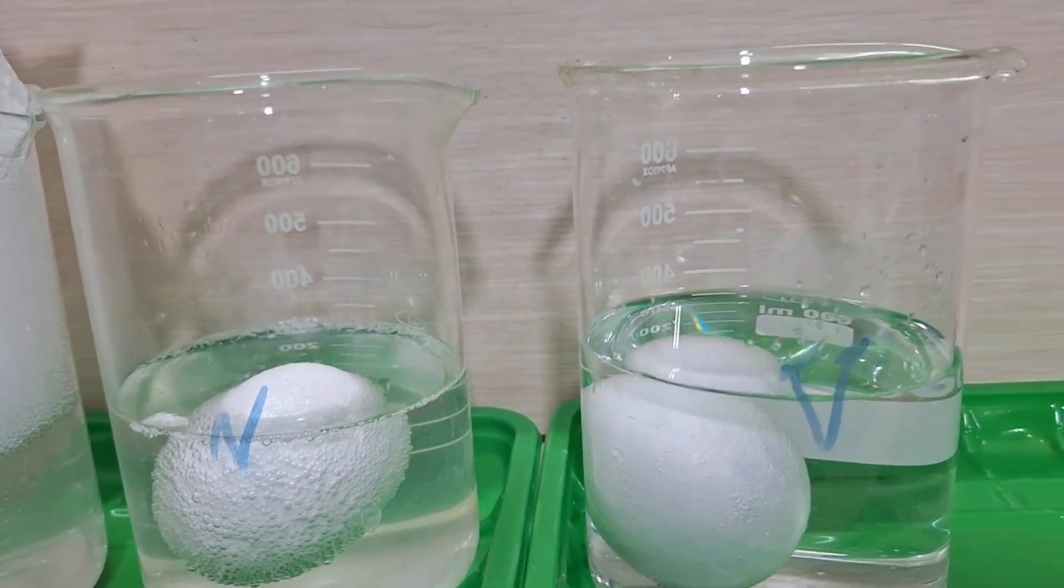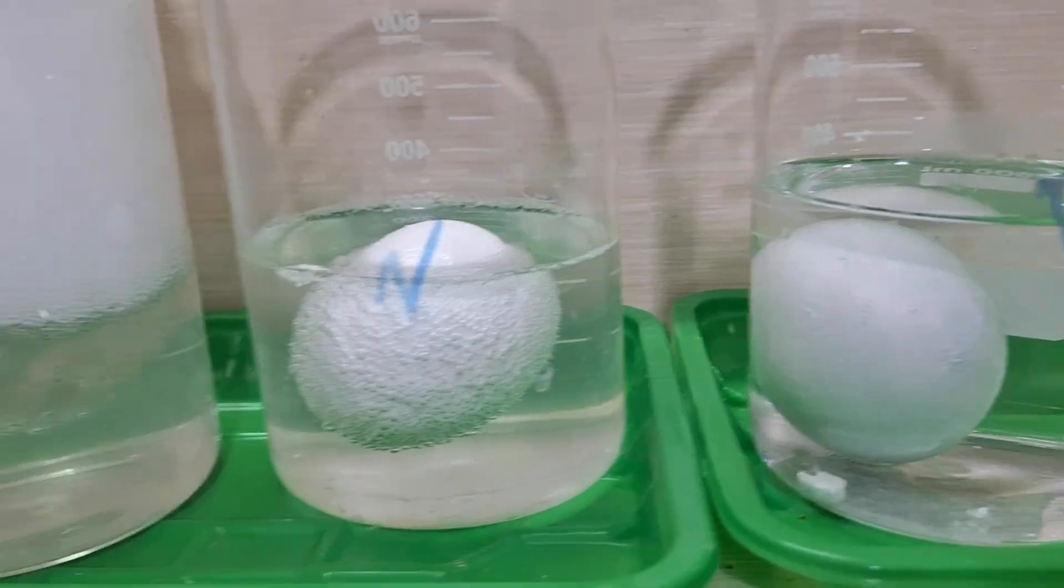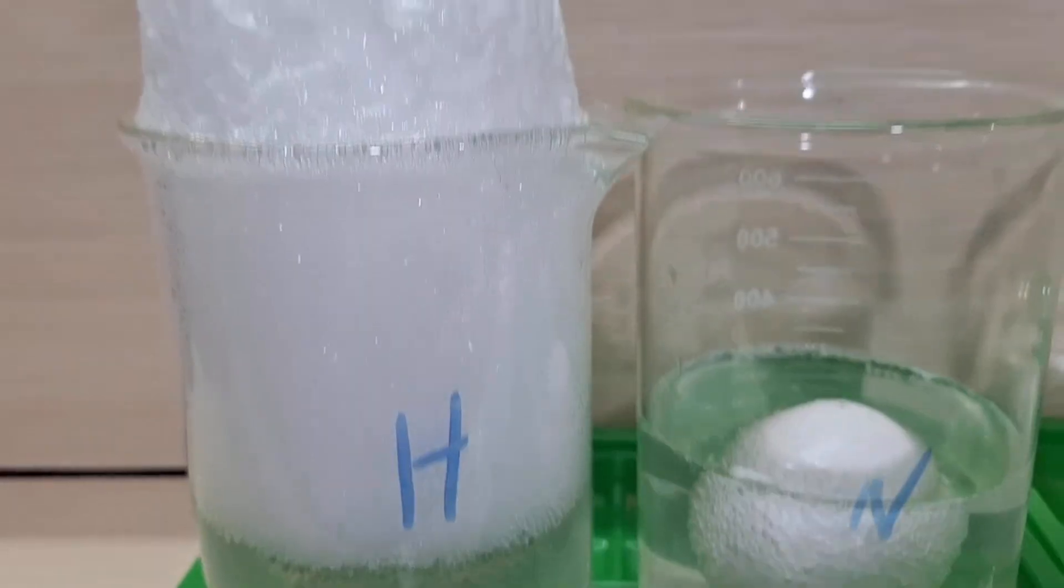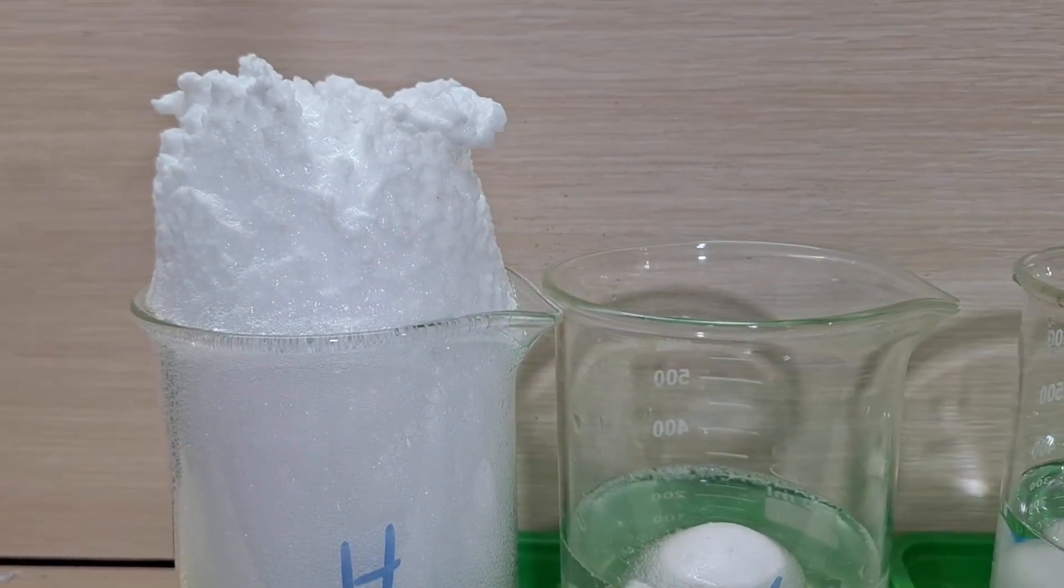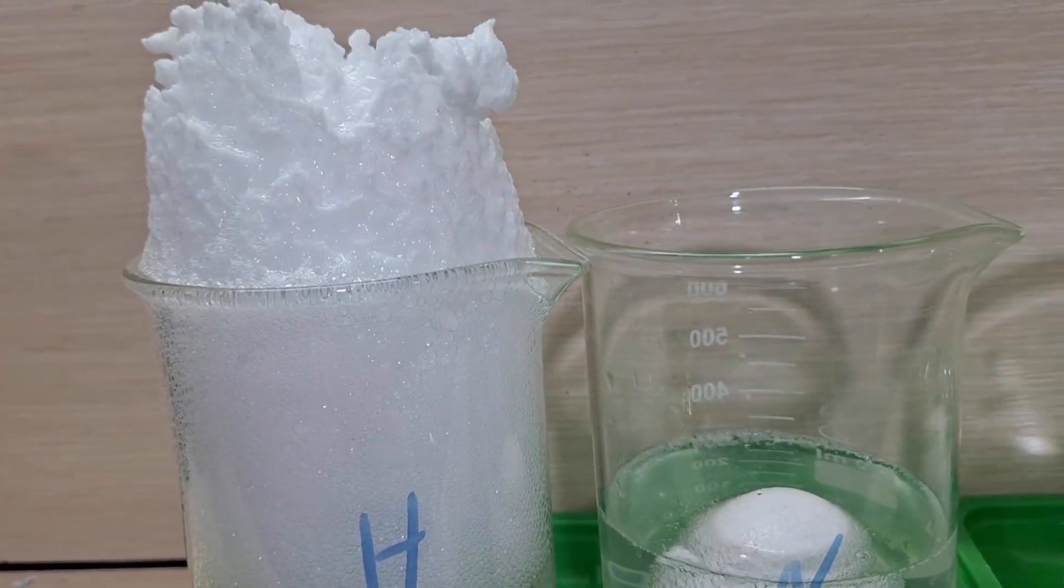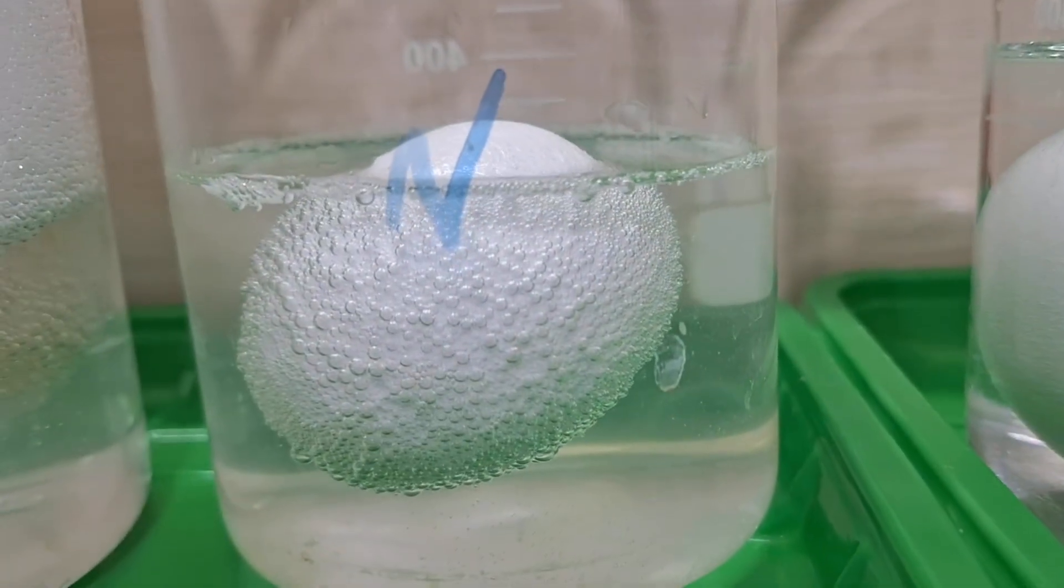As you can see in the video, the eggshell starts to bubble. Hydrochloric acid reacts most strongly with calcium carbonate and lime. This experiment demonstrates that ores with high lime content can be pre-treated by washing with diluted hydrochloric acid to remove the carbonates.